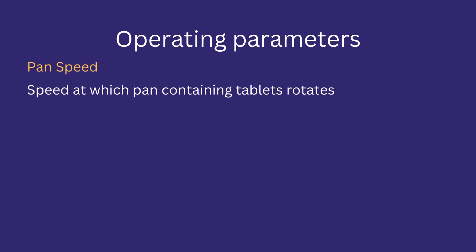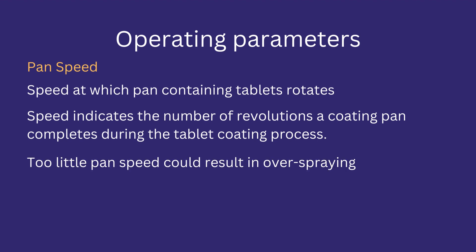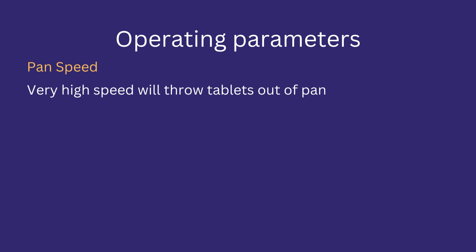Pan speed is the speed at which the pan rotates during the coating process, measured in revolutions per minute (RPM). It indicates the number of revolutions the coating pan completes during the tablet coating process. For a successful coating process and quality product, pan speed must match the tablet quantity in the pan. Too little speed could result in over-spraying and application of greater volume of liquid on tablets, causing the tablets to stick to each other.